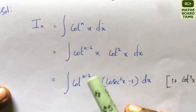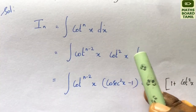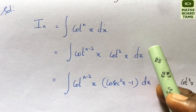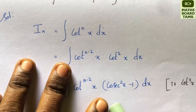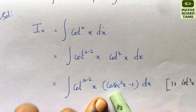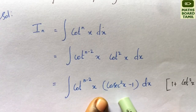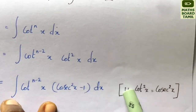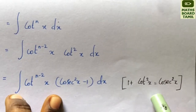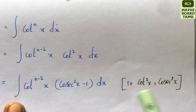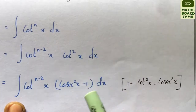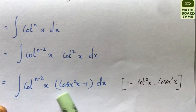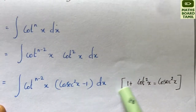We will see the integration by parts method and how to differentiate. We will change the cos square: 1 plus cos square x is equal to cos square x, giving us cos square x minus 1, into dx.